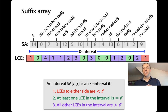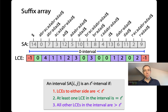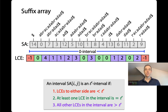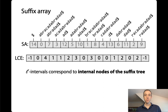We have intervals of various values of L — zero, one, two, three — and some are contained inside others. Now that we can find these L-intervals, why do we care? It must be that these L-intervals correspond to something in the suffix tree, because that's the whole purpose: we're trying to find structure inside the suffix array that tells us something about the suffix tree. And indeed, they correspond to the internal nodes of the suffix tree.